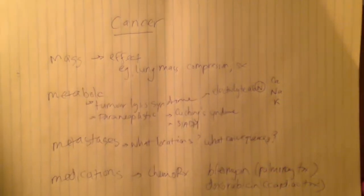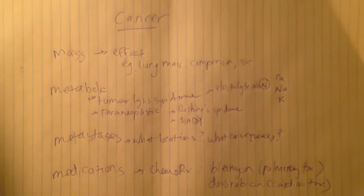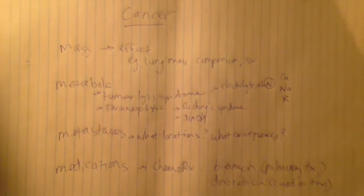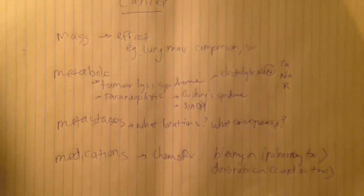Bleomycin for example, if they have signs of pulmonary toxicity, then you may need to worry about the FiO2 that you're having the patient on. And you can't have them on significantly high levels of FiO2 or else you're going to run into problems.